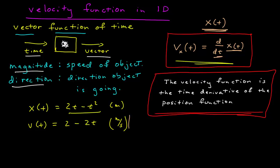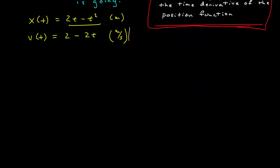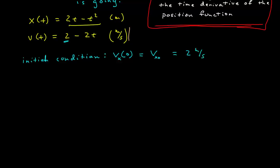Let's introduce some terminology similar to what we did with the position function. The initial condition of the velocity function is defined to be the velocity when time is equal to zero. This has a subscript x if I'm along the x-axis, or subscript y if along the y-axis. I might give this its own notation: v sub x naught, written as v_x0. For this function, that is equal to 2 meters per second — the value of the function when t equals zero.